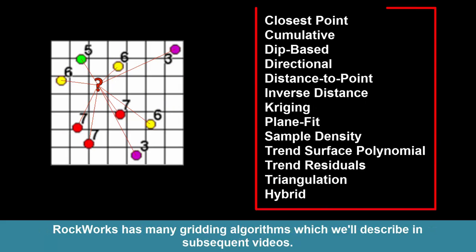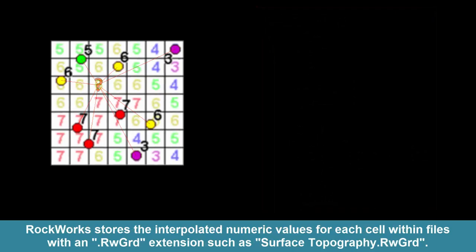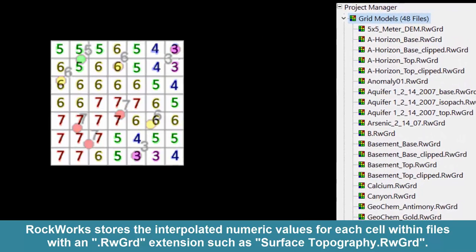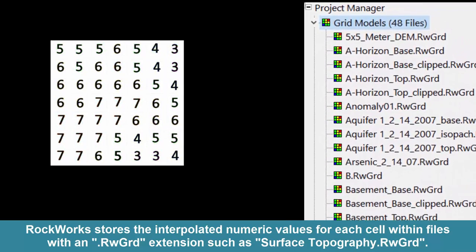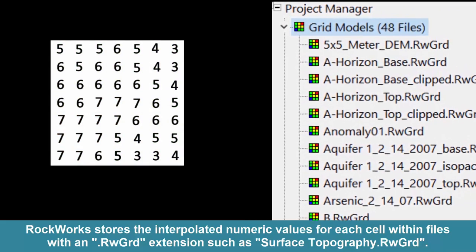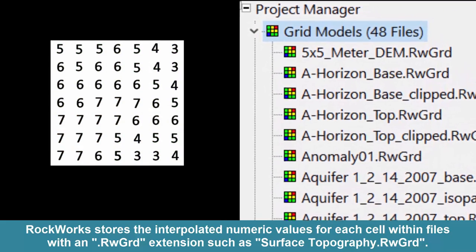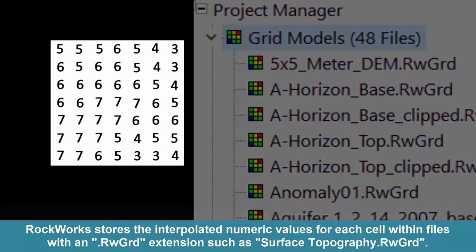The method or technique used to estimate these values is known as an algorithm. Rockworks has many gridding algorithms, which we'll describe in subsequent videos. Rockworks stores the interpolated numeric values for each cell within files with an rwgrd extension, such as surface-topography.rwgrd.